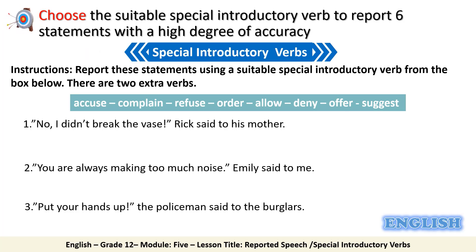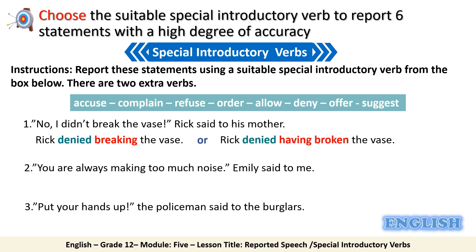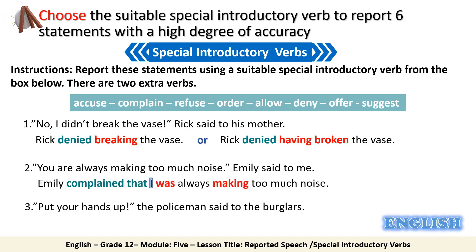Well done. Let's correct together. For the first sentence, the verb is 'deny.' We should write: 'Rick denied breaking the vase,' using the -ing form after 'denied,' or 'Rick denied having broken the vase.' For sentence two, the verb is 'complain': 'Emily complained that I was always making too much noise,' changing 'you' to 'I' and the present progressive to the past progressive.